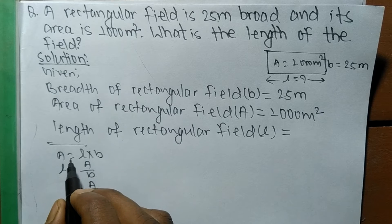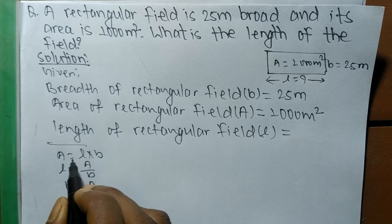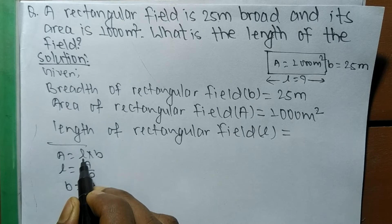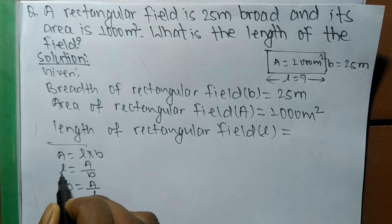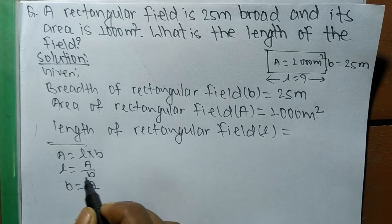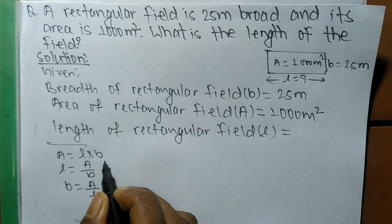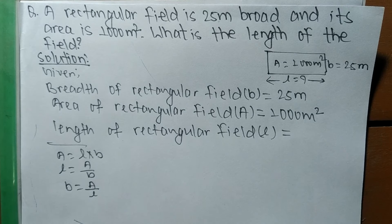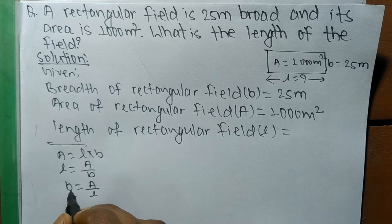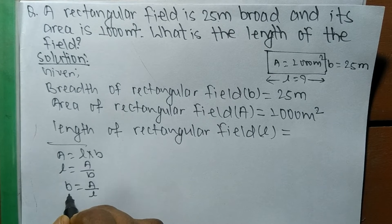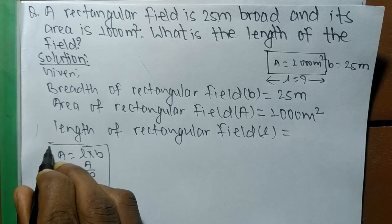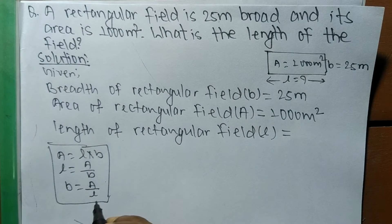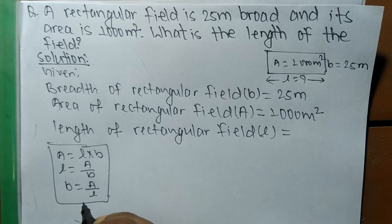So when we have to find area, we use the formula: Area equals length times breadth. When we have to find length, we use l equals A divided by b — area of rectangle divided by breadth. When we have to find breadth, we use b equals A divided by l — area divided by length. These three are the basic formulas to solve a problem related to rectangles.